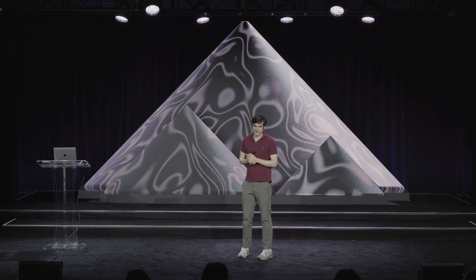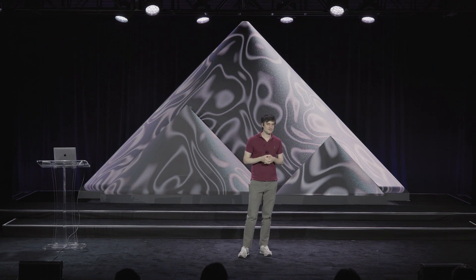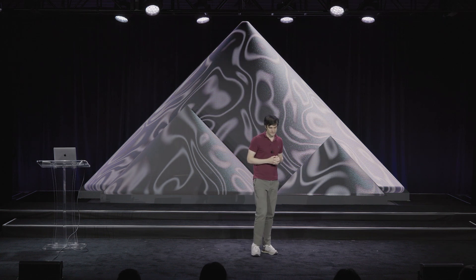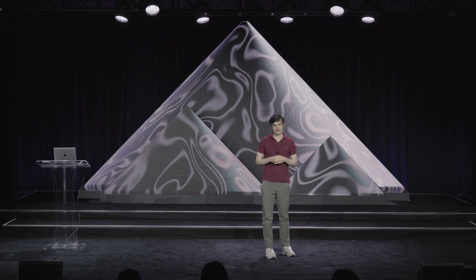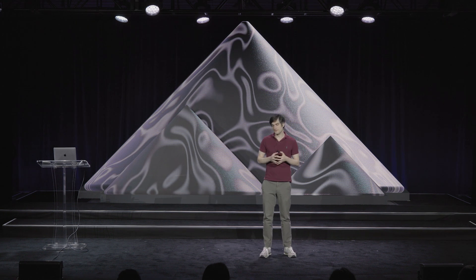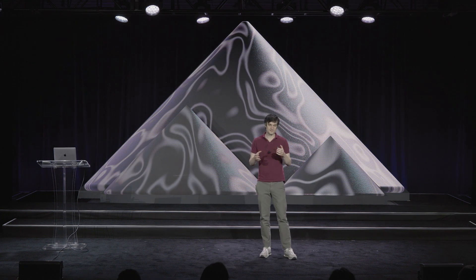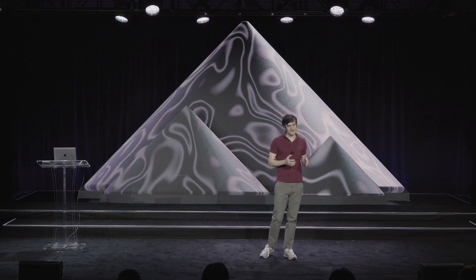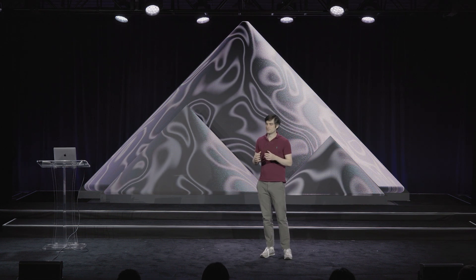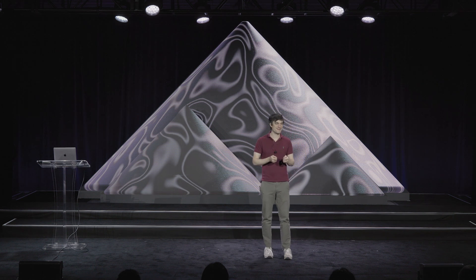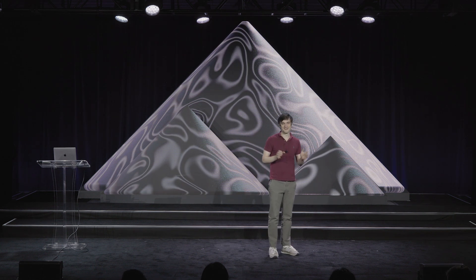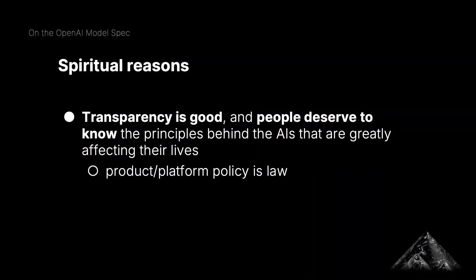We also want to teach the model directly from the document if we can, using synthetic data — similar ideas to constitutional AI. And lastly, we want to be able to clarify to users what's a feature and what's a bug. Sometimes people will complain that the model is being lazy or seems politically biased in a certain way. We want to be able to say that's actually a bug — this is complicated, we didn't do that on purpose.